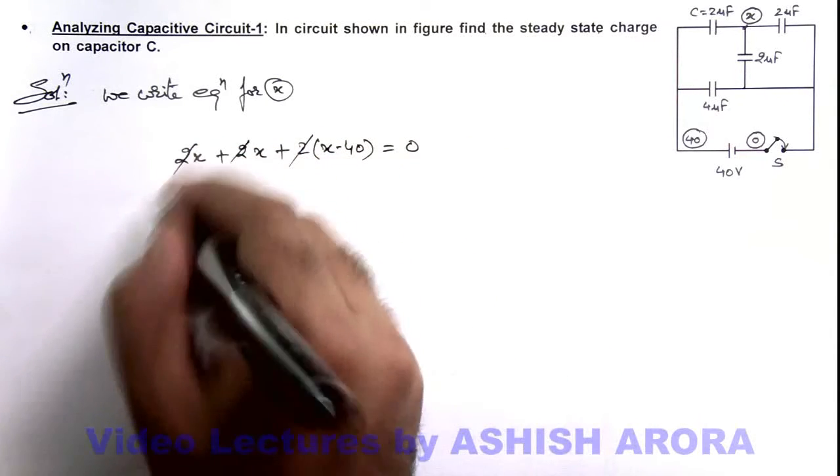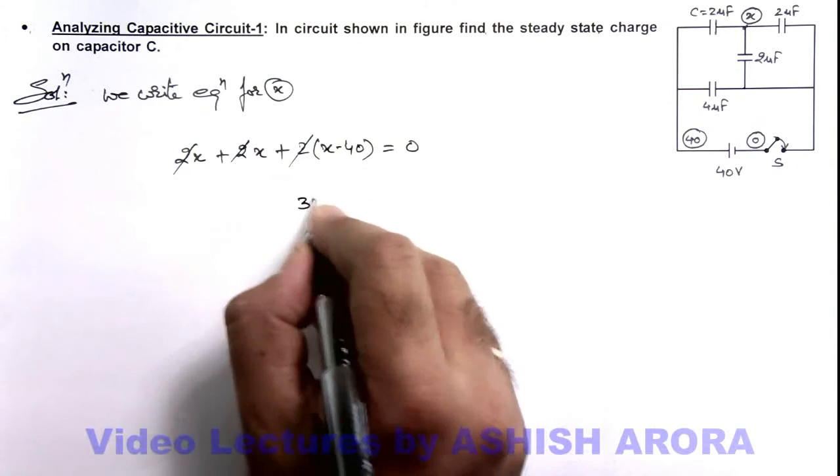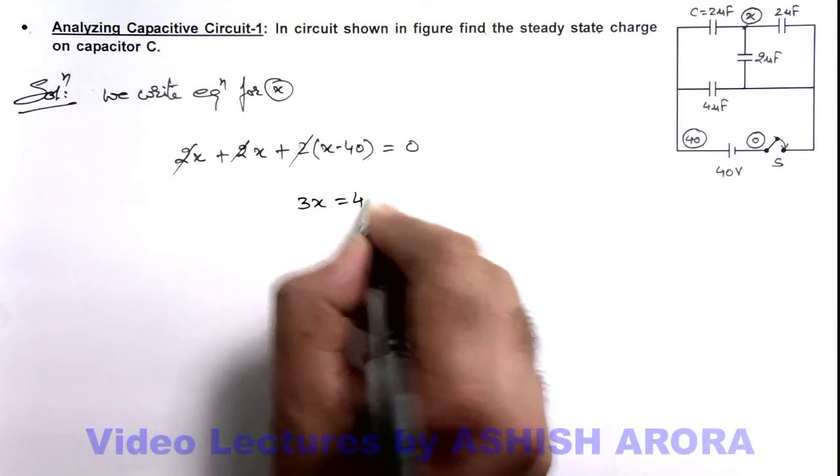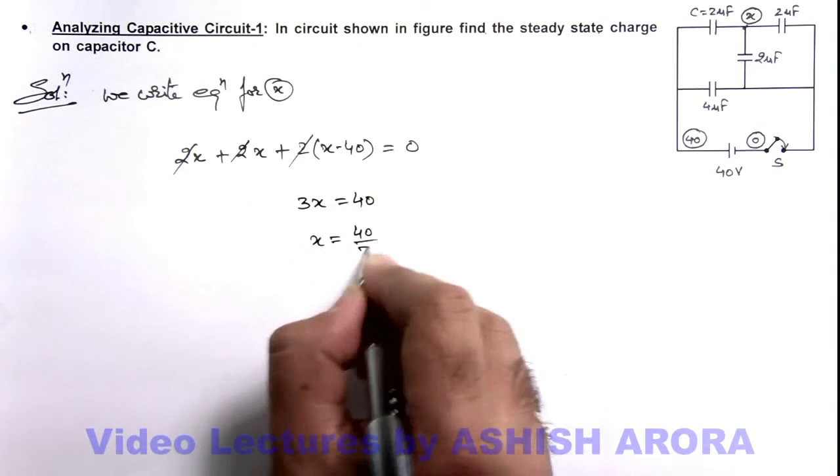Here this 2 gets cancelled and the value of x we can solve, which gives 3x is equal to 40. So x will be 40 by 3 volt.